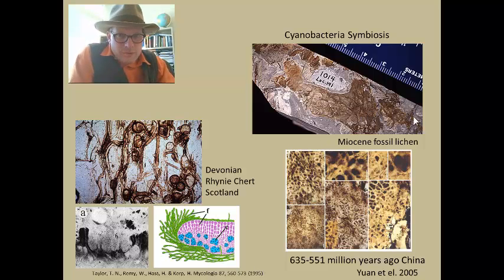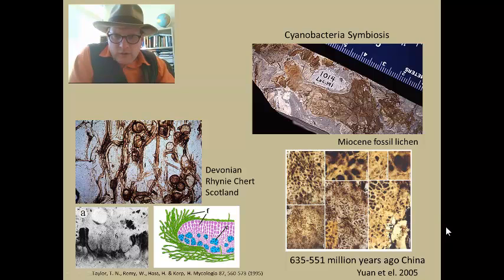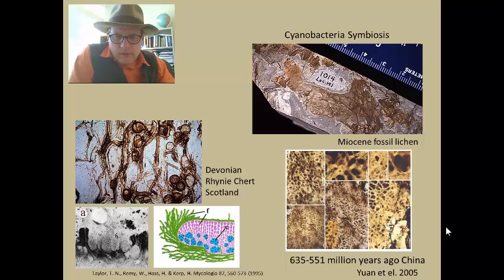Fossil lichen extends up into the Miocene. The earliest record, which is a little questionable whether it relates to modern lichens, comes from about 600 to 635 million years ago in China. You can see little cells with hyphae coming off, possibly associated with algae in an aqueous marine environment. This may be an example of a cyanobacteria-algae-fungi relationship that arose independently of lichens, which may have appeared in the Devonian, Silurian, or Carboniferous.